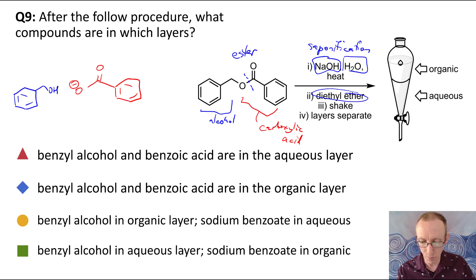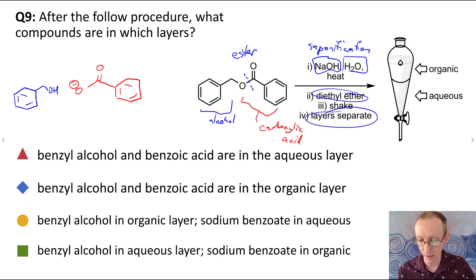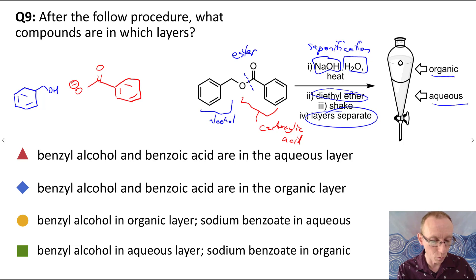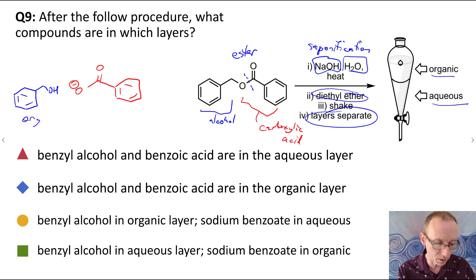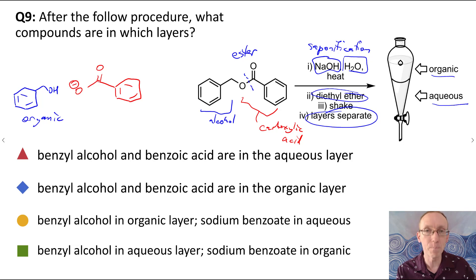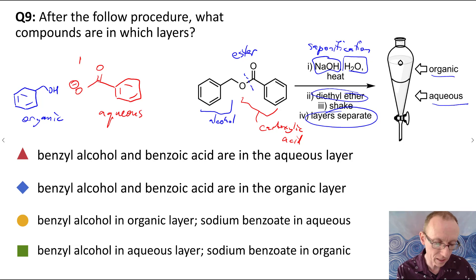The hydrophilic or very water-soluble compounds will partition mainly into the aqueous layer — the water layer. When the layers separate, water is heavier than diethyl ether, so we get the aqueous layer on the bottom and the organic layer at the top. We'll find that the benzyl alcohol will be in the organic layer — mostly in the diethyl ether layer.